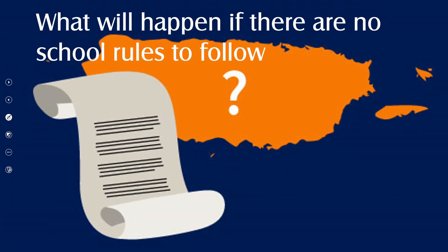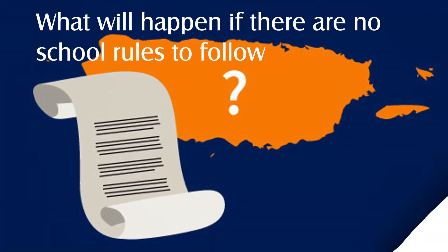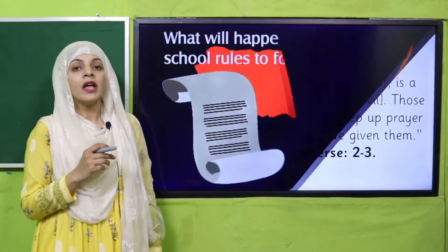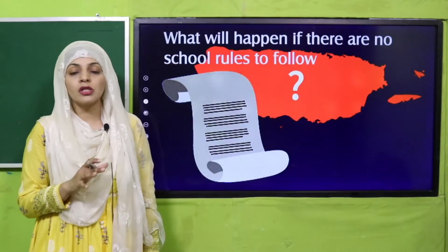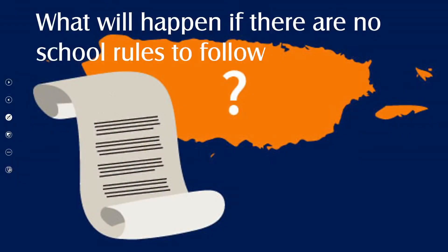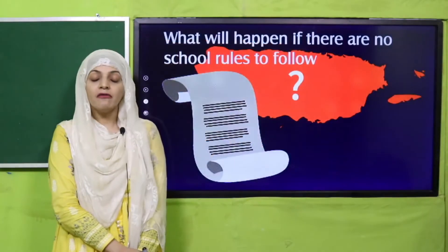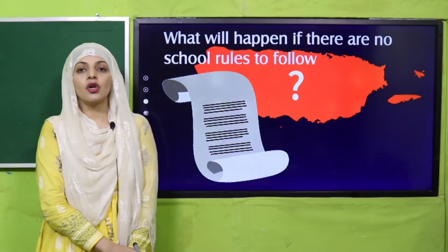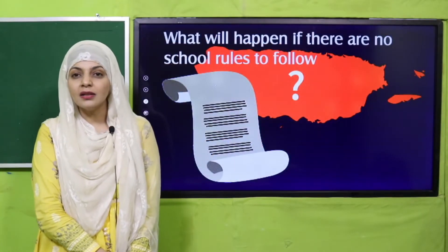Here you can see: what will happen if there are no school rules to follow? Quickly take a paper and pencil and write down — agar koi school rules na ho follow karne ke liye to kya hoga? Pause the video and quickly write down. Very good. So aapka school kaise ho jayega?